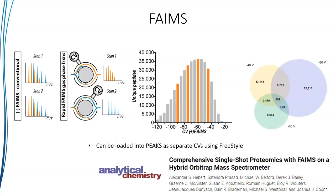First, I'd like to talk about FAIMS. This is the brand of ion mobility provided by Thermo, and it's quite different from other ion mobility variations. What they use is something called compensation voltage, where they switch between different voltages to pick up different types of peptides based on their ion mobility. With one compensation voltage they're picking up the orange peptides, and with another compensation voltage they're picking up the blue peptides, which in a traditional mass spec experiment would overlap in terms of their M/Z, and you wouldn't be able to get MS2 scans from each of them.